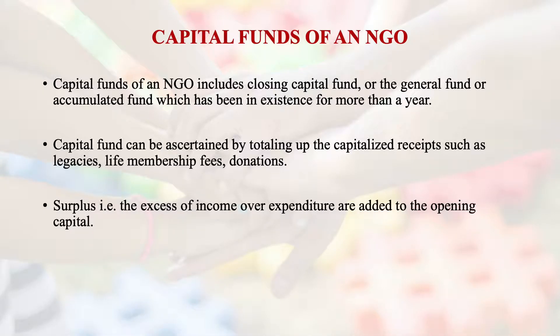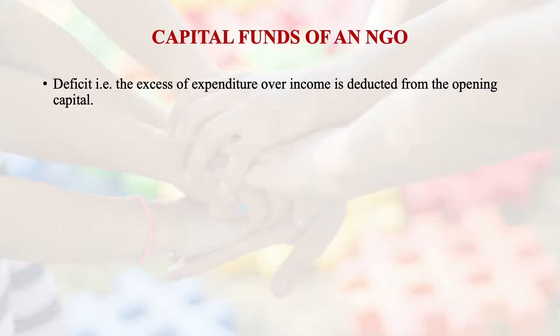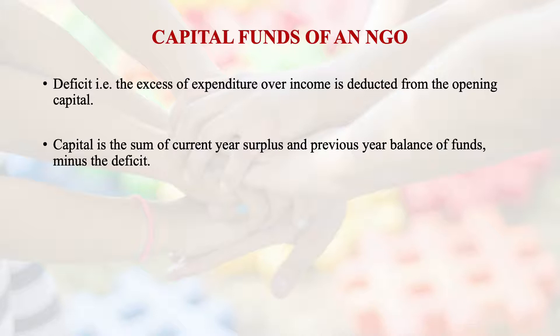Expenditure can be in the form of payment of salaries, maintaining infrastructure, working for the poor or vulnerable — the expenses incurred for providing services from the NGOs. If there is excess of income over expenditure, it is added to the opening capital and taken forward. If there is a deficit — excess of expenditure over income — it is deducted from the opening capital. The capital is the sum of the current year surplus and previous year balance of funds, minus the deficit.